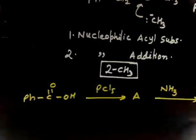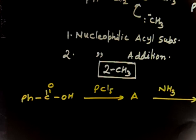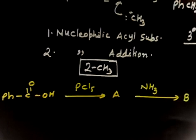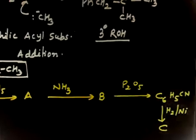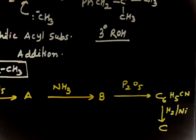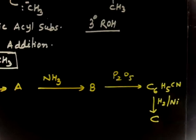Let us write down the product in this reaction. You have an acid that reacts with PCl5, then compound A further reacts with ammonia. The product, let us call product B, further reacts with P2O5 and this gives C6H5CN. Finally, hydrogenation is done: H2 in the presence of nickel gives C. You have to identify A, B, C.